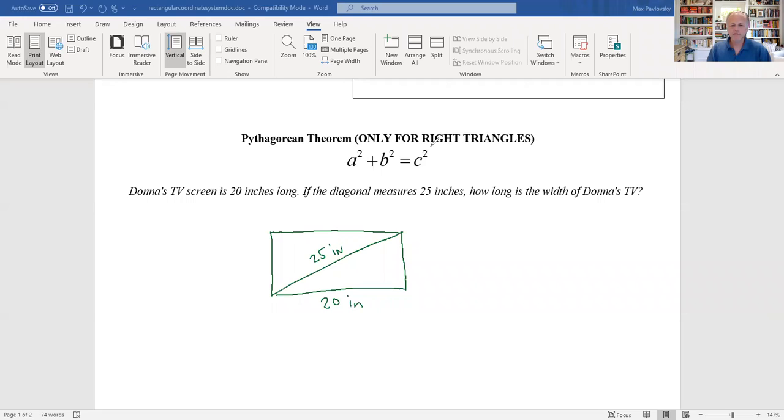So remember the Pythagorean theorem only works for right triangles. So if we draw a little box right there, we've got a right triangle we're dealing with. And we're going to call this a and this b and this c. So we've got a squared plus b squared equals c squared. So I'm going to substitute what I know, which is the b squared would be 20 squared. The c squared is going to be 25 squared. So we calculate this out. This is going to be 400. This is going to be 625. So we subtract 400 from both sides.